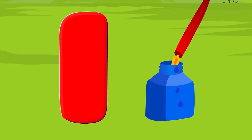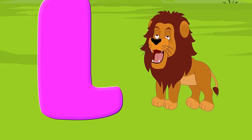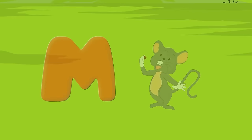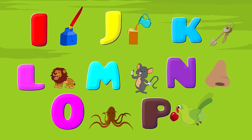I for ink, i-i-ink. J for juice, j-j-juice. K for key, c-c-c-key. L for lion, l-l-lion. M for mouse, m-m-mouse. N for nose, n-n-n-nose. O for octopus, o-o-o-octopus. P for parrot, p-p-parrot.